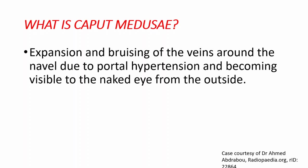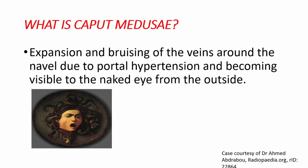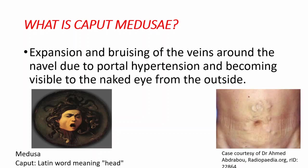Caput Medusa is basically expansion and bruising of the veins around the navel due to portal hypertension, becoming visible to the naked eye from the outside. The name comes from Greek mythology — 'caput' is the Latin word meaning head, and these veins around the abdomen look like Medusa's head, which is why we call it Caput Medusa.